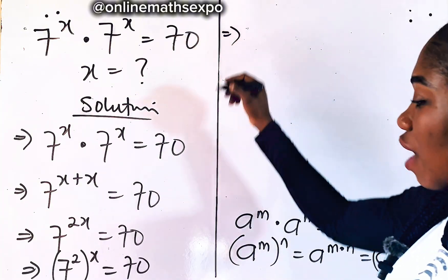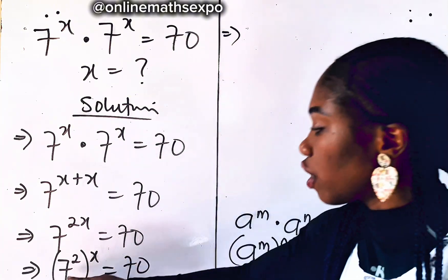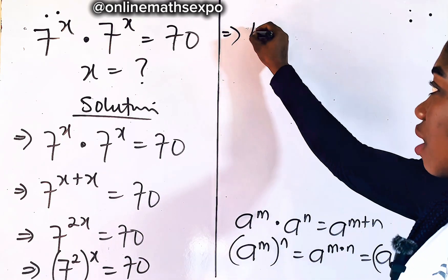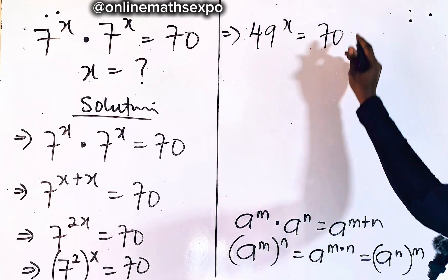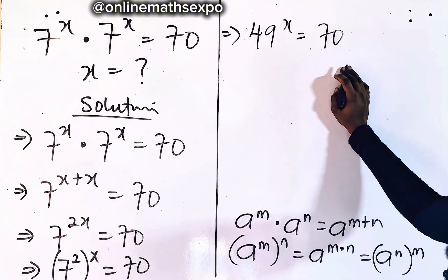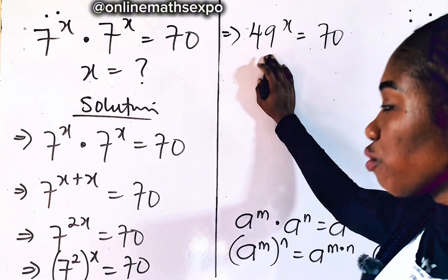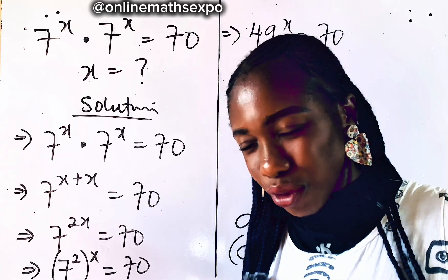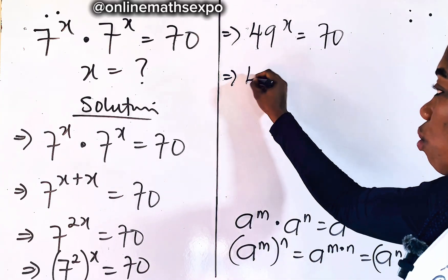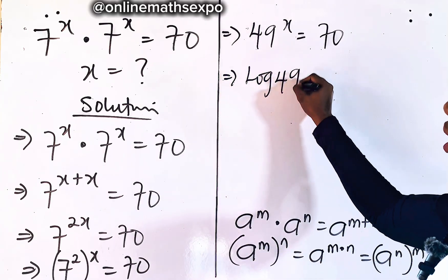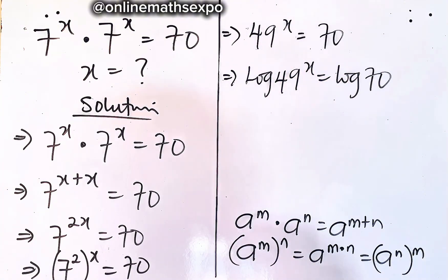Let's keep solving. You know that 7 squared is 49, so we have 49 to the power of x is equal to 70. Now at this point, can we express 70 in powers of 49? It's not possible. So just quickly take the log of both sides — we have log of 49 to the power of x is equal to log of 70.